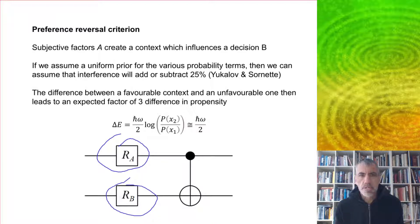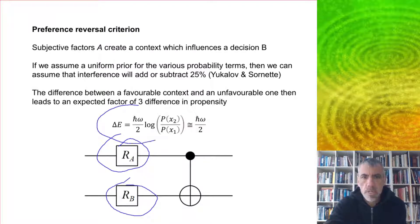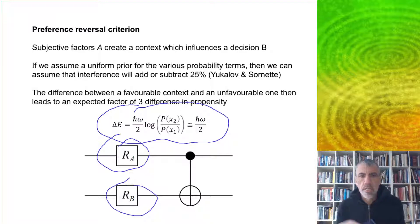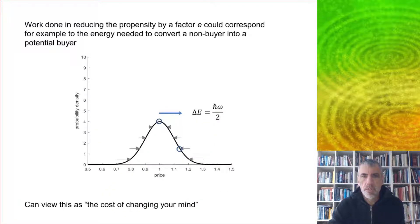The difference between a favorable context and an unfavorable one leads to an expected factor of three difference in propensity. Using our energy formula, the change in energy associated with this gap equals the log of the ratio of propensities. Since three is close to Euler's number E, this is about equal to the base energy of a quantum harmonic oscillator.